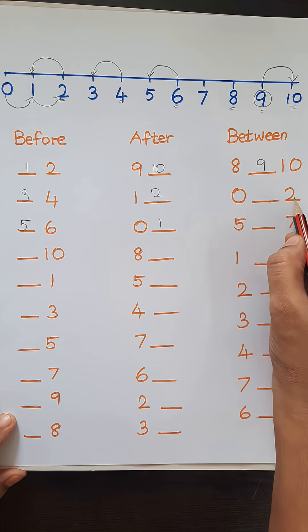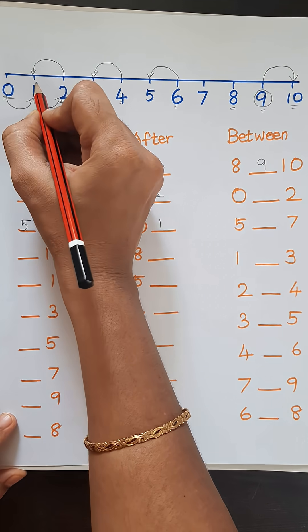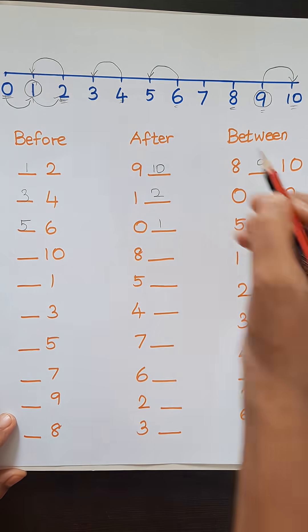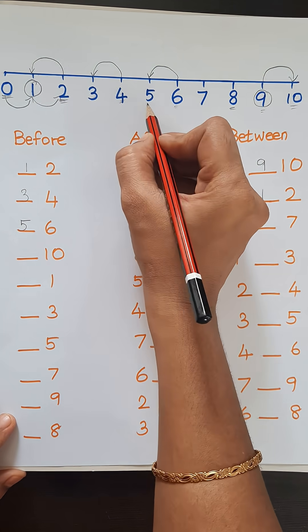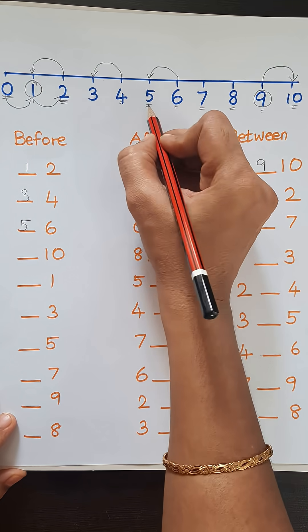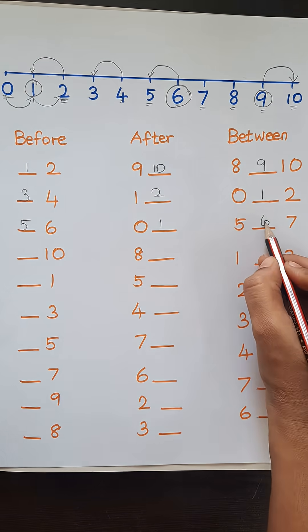Next number is 0 and 2. 0 and 2. So what comes in between 0 and 2? 1. So we will write 1. Next one is 5 and 7. What comes between 5 and 7? 6. So we will write 6.